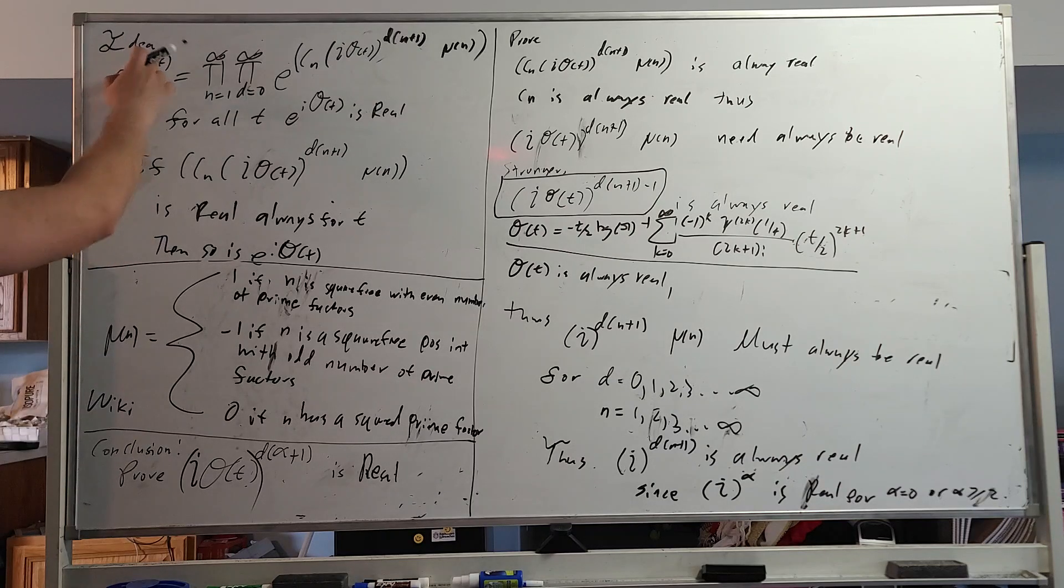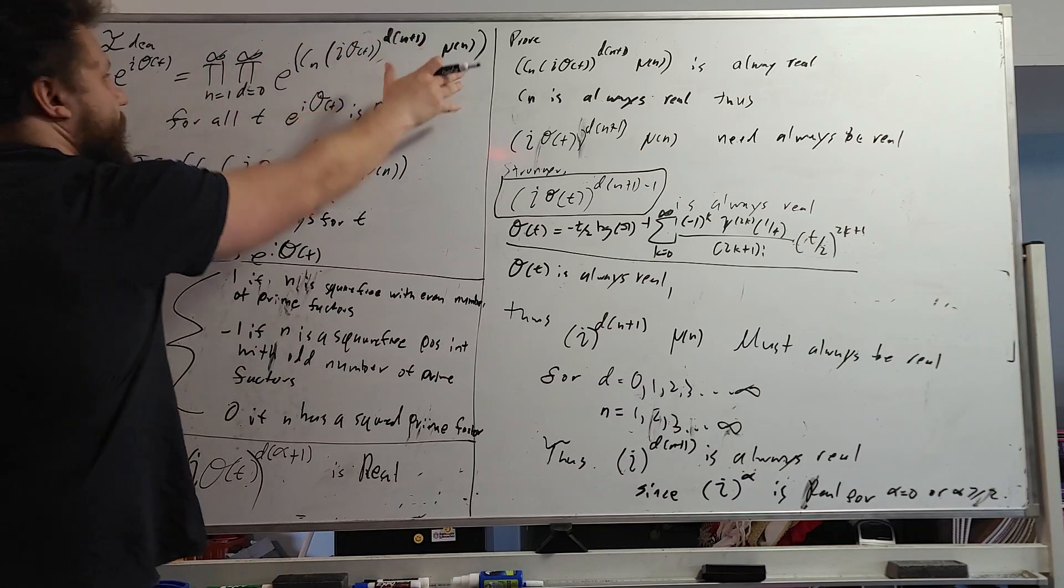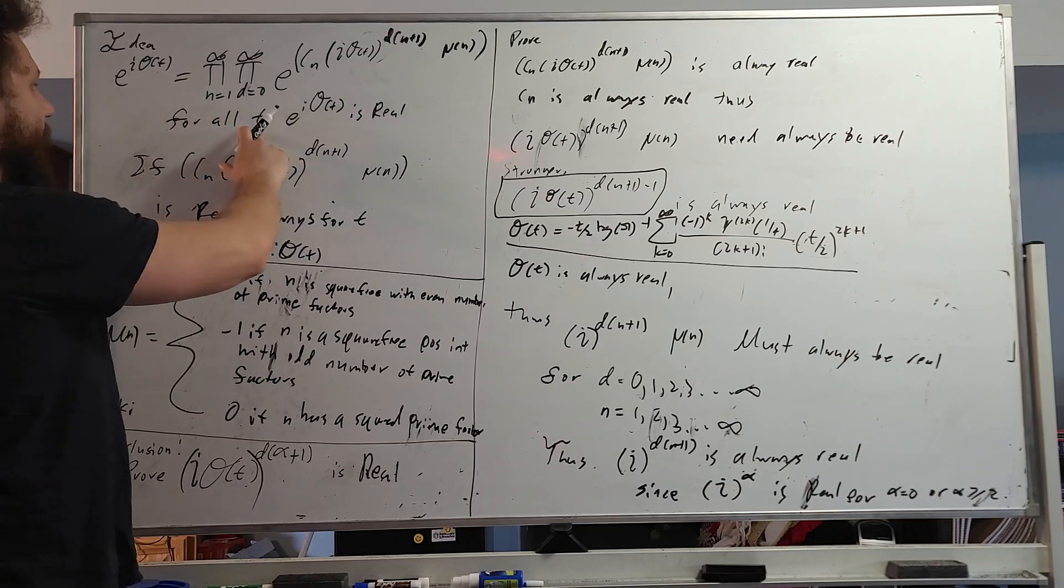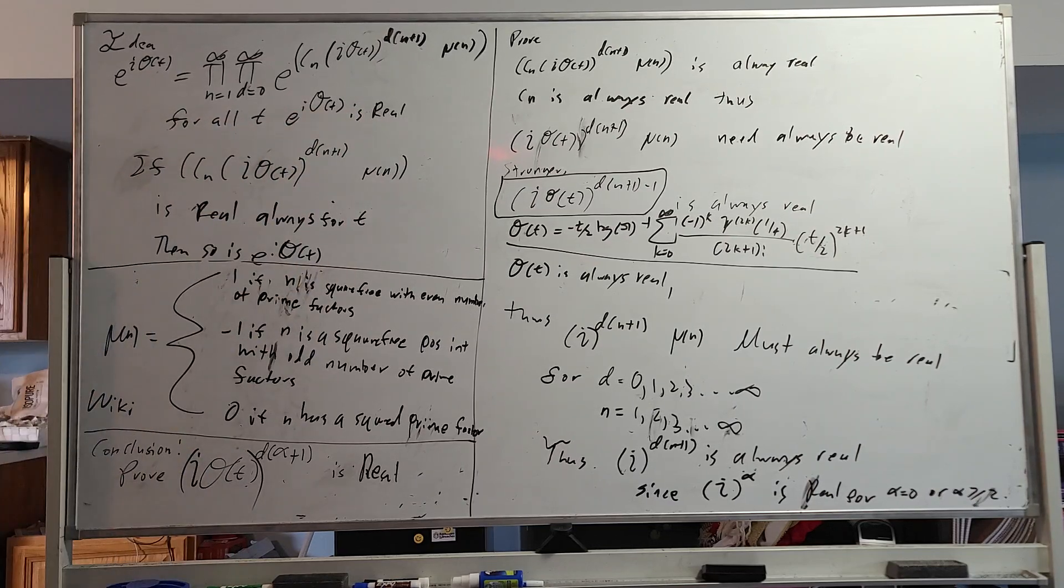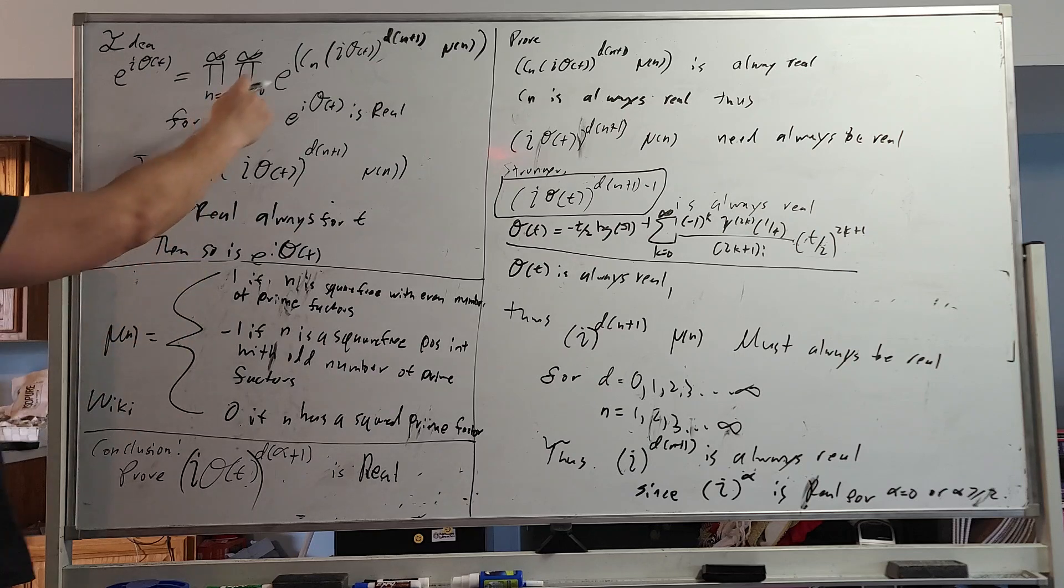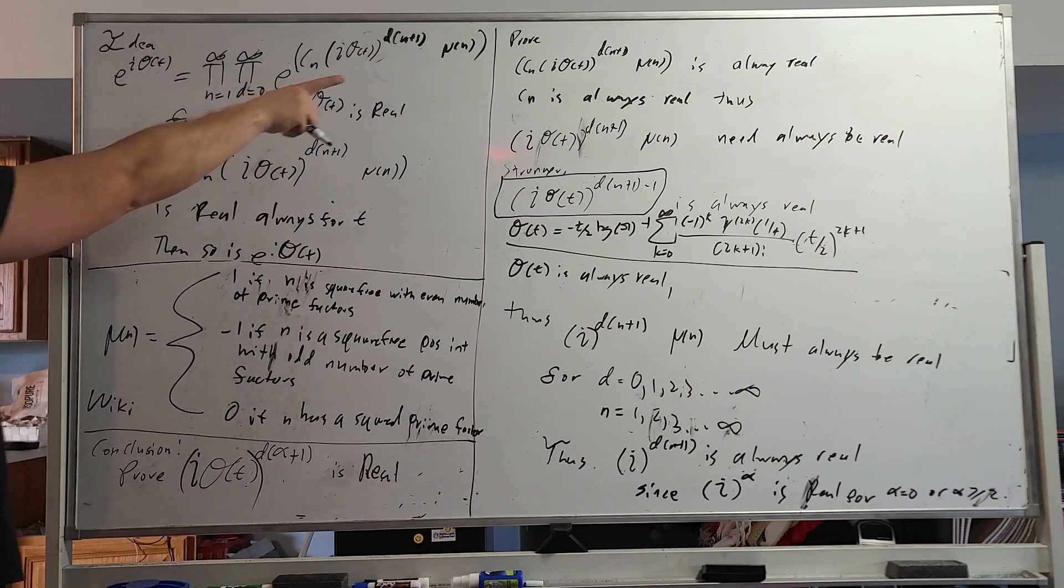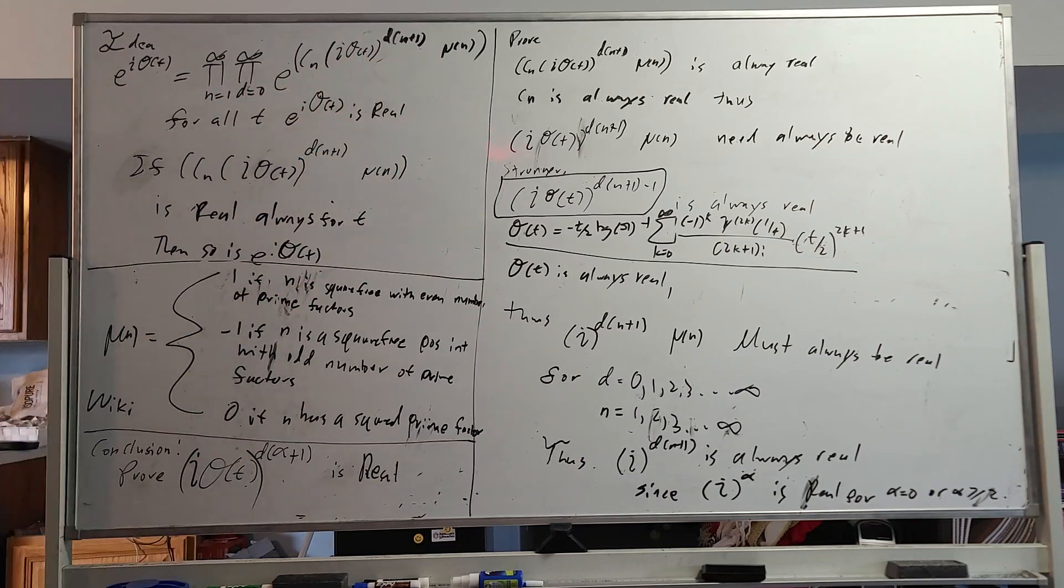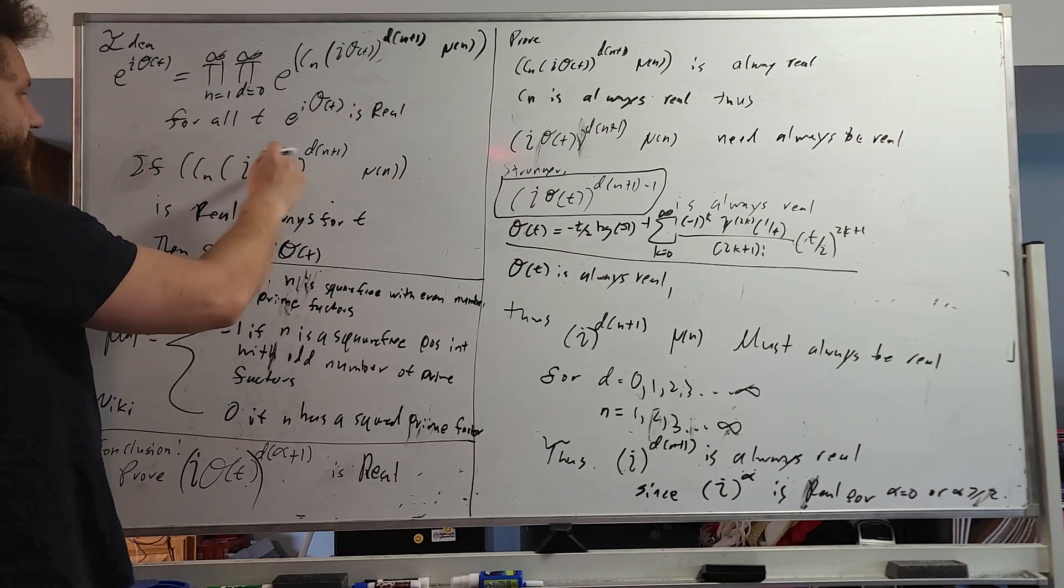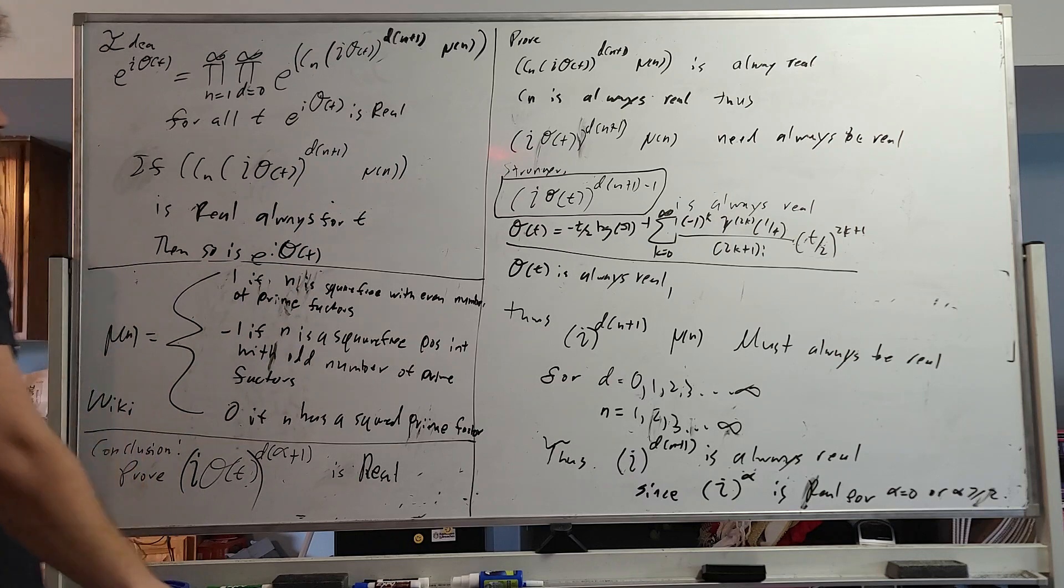All right, here we go. We have e to the i theta t, and we have all of this right here. Here's our product representation. It's very nice. And for all t, e to the i theta t is real. It's very cool. So let's first identify the main component here. E to the whatever. If this is real, then all of this is real. So let's just first identify this part right here. So we have c sub n, and you have all this, the d times n plus 1, Mobius n.